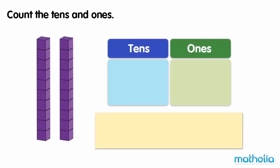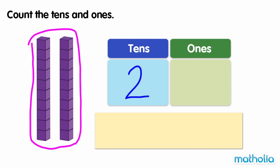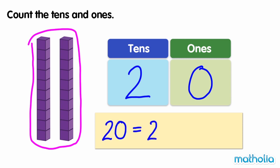Count the tens and ones. There are two tens. There are zero ones. Two tens and zero ones make twenty. Twenty is equal to two tens.